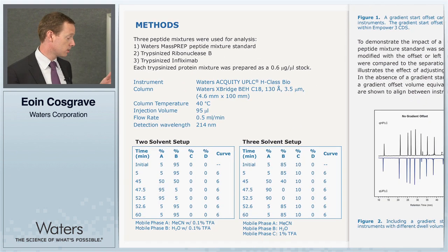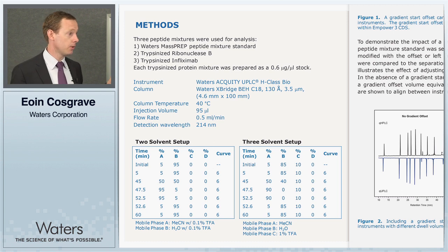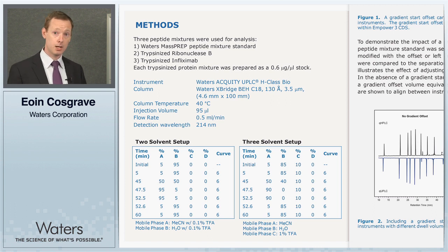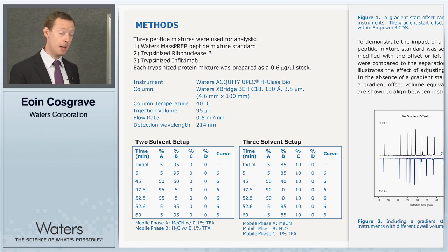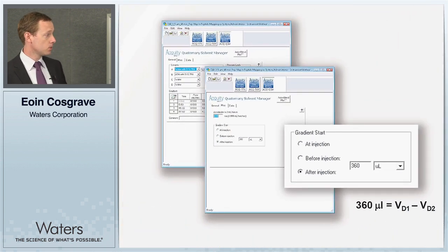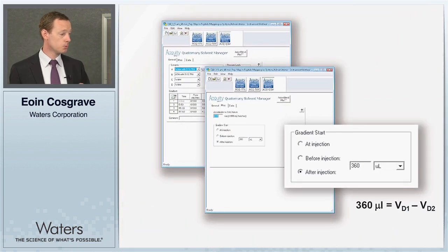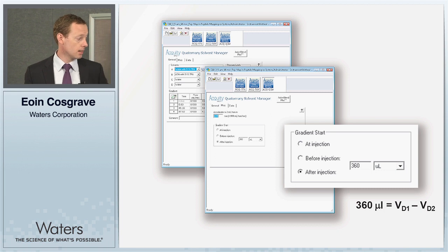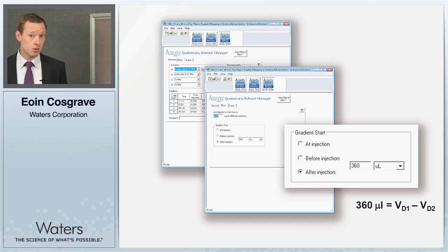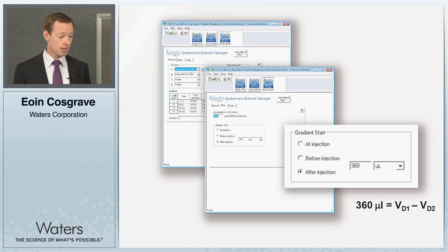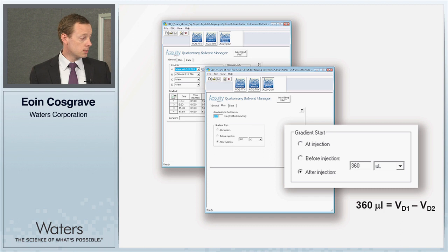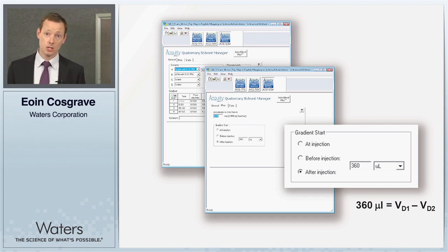In this example we've used the H-class Bio with HPLC columns. One thing we focus on specifically is determining the dwell volume differences between an HPLC instrument versus the UPLC, because we find that has a very important impact on the chromatography. In figure one, we address the difference in dwell volume between the two instruments, which is easily adjusted in the instrument method by selecting an after-injection delay volume. By doing so, you can align the chromatography and include this isocratic hold step within the instrument method without making any other changes to the gradient setup.